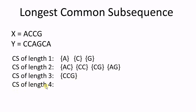Next, finding the common subsequence of length 4. For x, it must be a, c, c, g. And there's no a, c, c, g in y. So there's no common subsequence of length 4. So by manually analyzing these two strings, we can find that the longest common subsequence is c, c, g, with the length of 3.